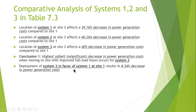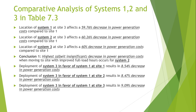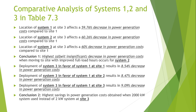Deploying System 3 in favor of System 1 at Site 1 results in an 8.54% decrease in power generation cost. Similarly, deployment of System 3 in favor of System 1 at Site 2 results in an 8.47% decrease, and at Site 3 results in a 9.09% decrease. It can be concluded that the highest saving in power generation cost is obtained when the 2,000 kilowatt system is used instead of the 2 kilowatt system at Site 3.